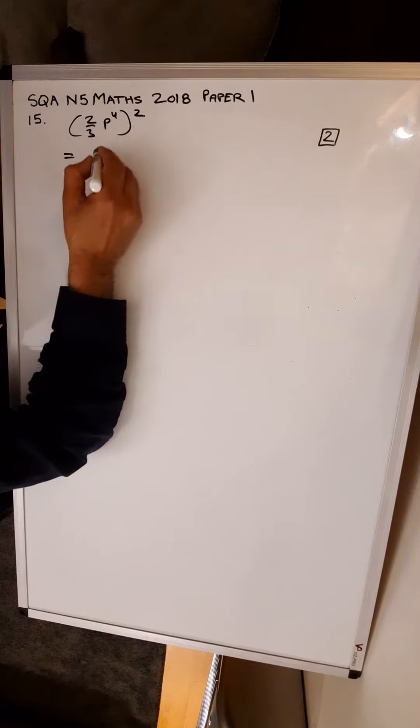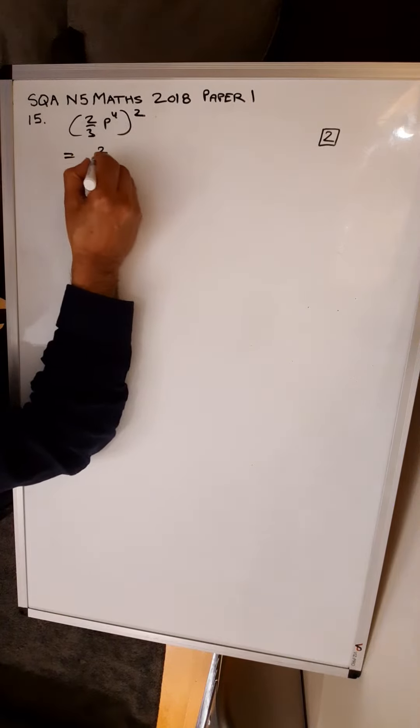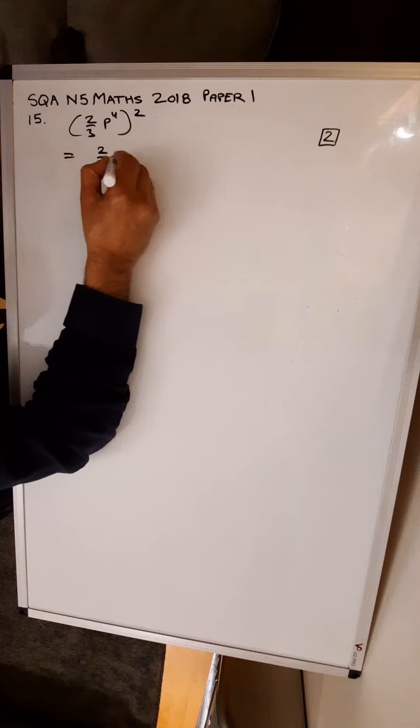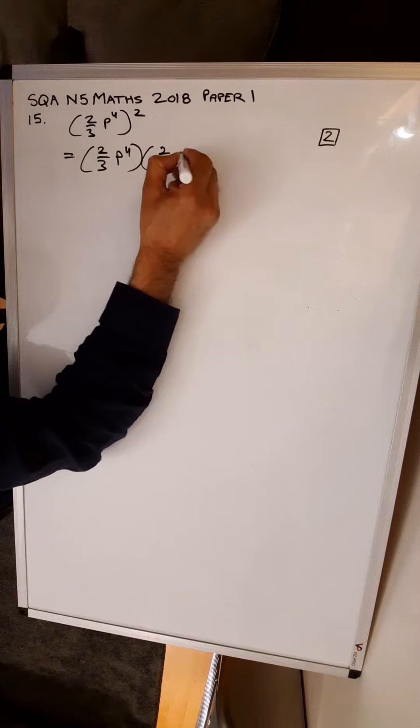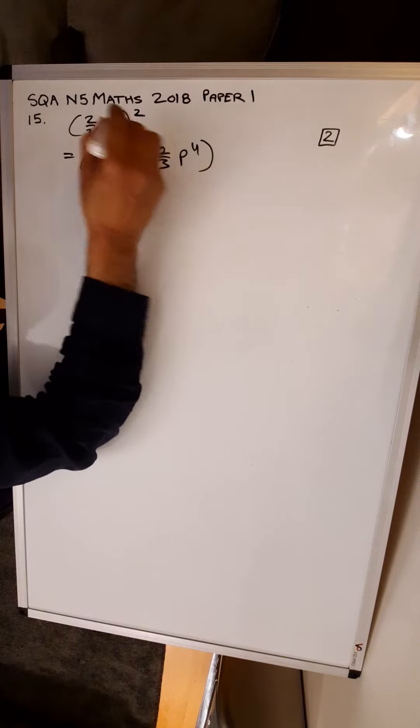What that means is you're squaring whatever is inside the bracket, so you could write it twice: 2 over 3 p to the 4, times 2 over 3 p to the 4. That's what the square means.